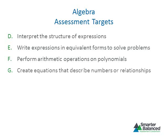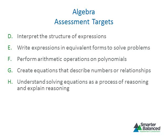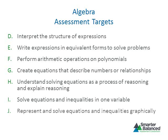The fourth target focuses on creating equations that describe numbers or relationships, requiring students to create equations and inequalities in one variable to solve problems or to create and graph equations in two variables to represent relationships between quantities. The fifth target focuses on solving equations as a process of reasoning and explaining one's reasoning, requiring students to solve radical and rational equations in one variable. The sixth target focuses on solving linear equations and inequalities as well as quadratic equations in one variable. The seventh and final target focuses on representing and solving equations and inequalities graphically, requiring students to interpret a line or curve as a solution set of an equation in two variables.